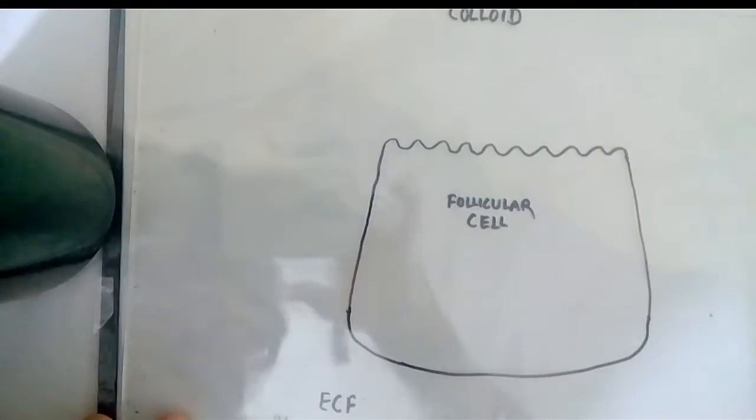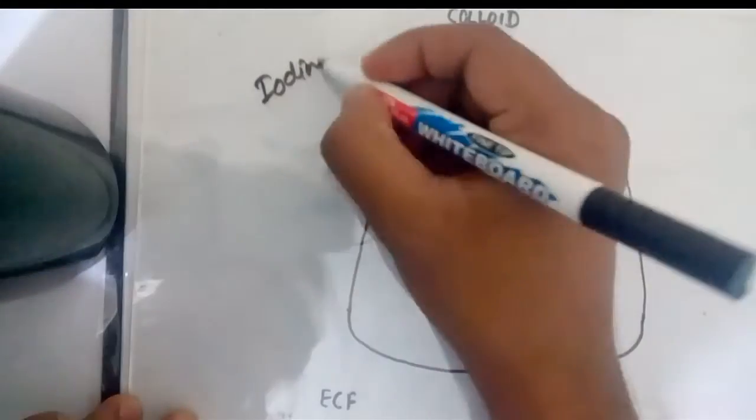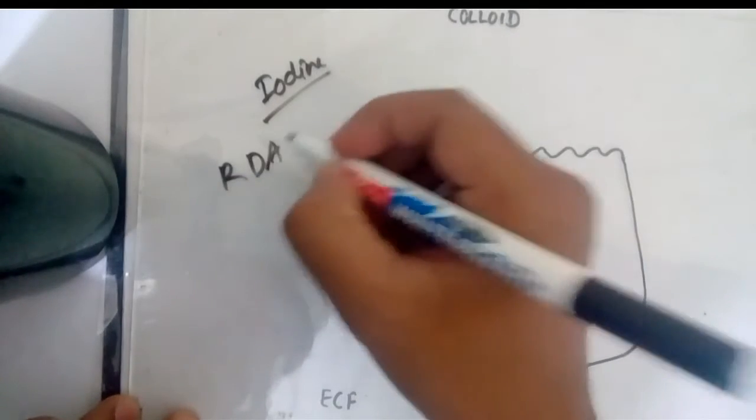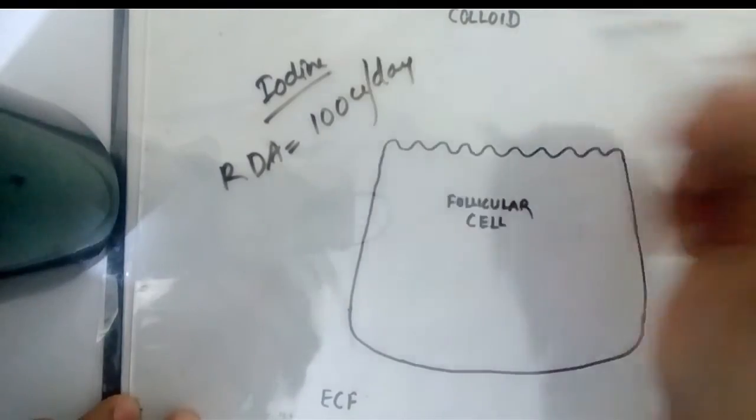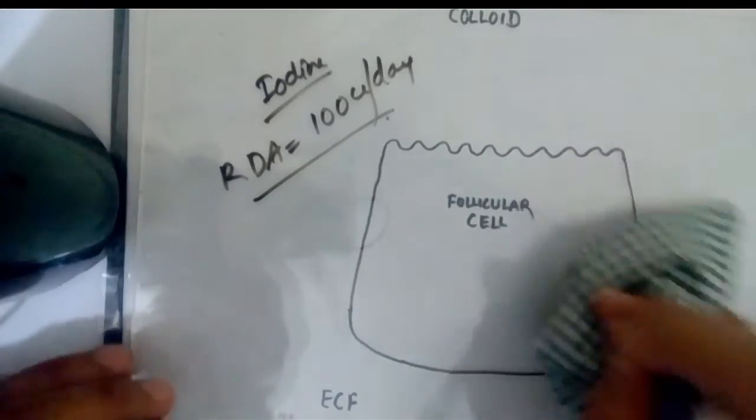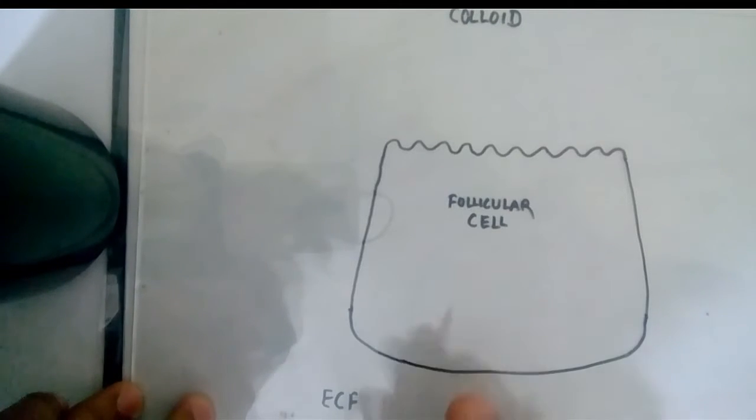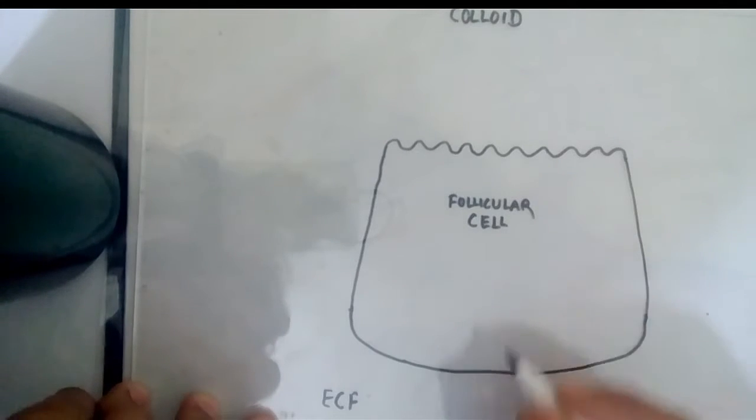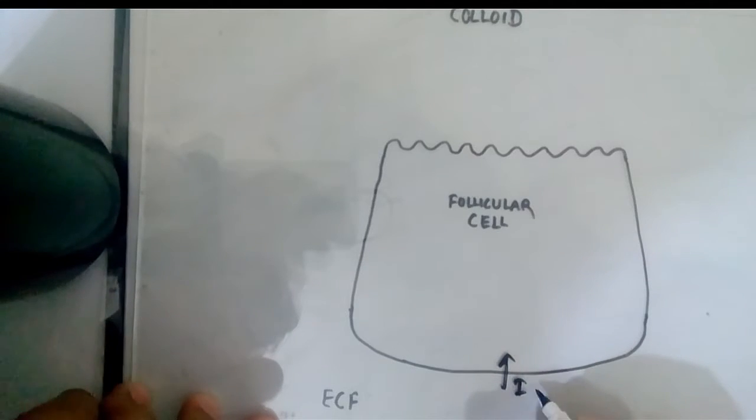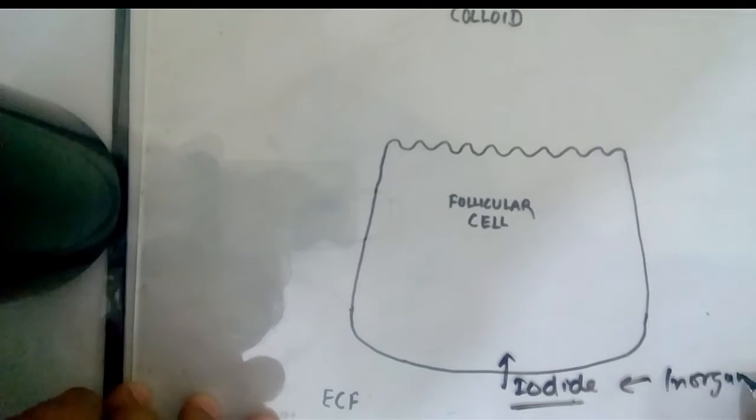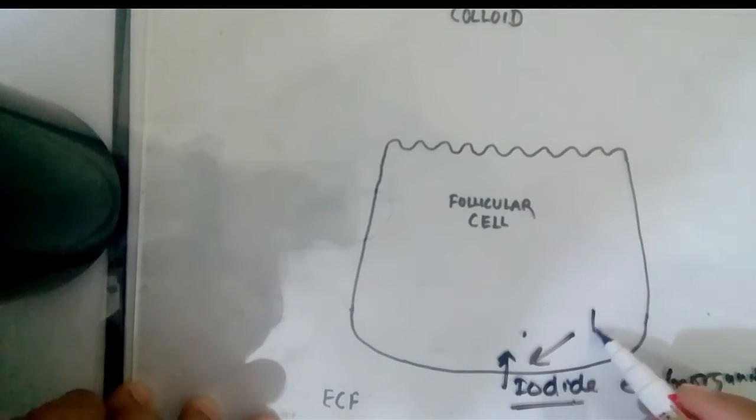For synthesis of thyroid hormone we need iodine. The recommended daily allowance for iodine is 100 micrograms per day. We take it from different sources in food which is digested in the GIT and comes to blood, then blood takes it to the thyroid gland. After it reaches the thyroid gland, the follicular cell uptakes the iodine. Iodine is in the form of iodide which is an inorganic form. The follicular cell just uptakes it and this process is known as iodine trapping or iodide trapping.